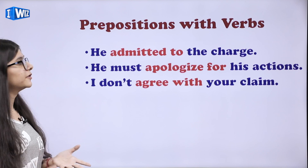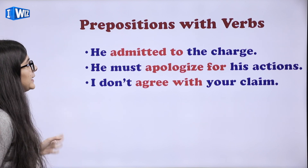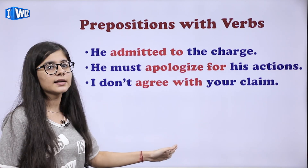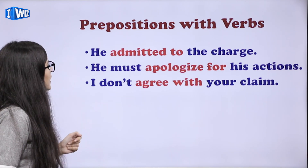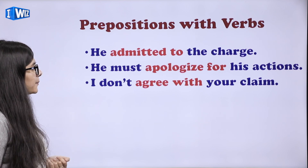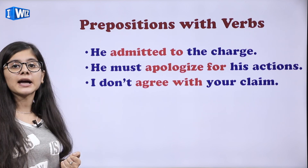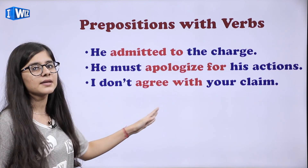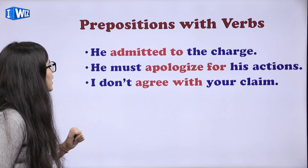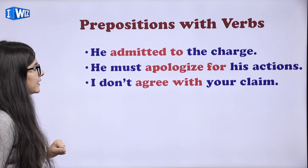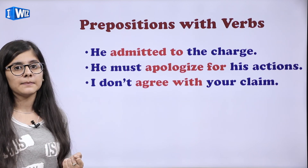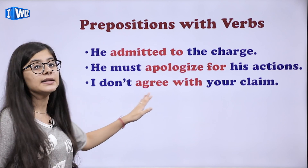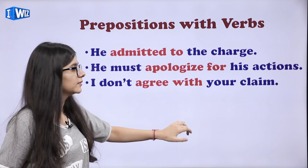Prepositions with verbs. He admitted to the charge — hamesha admitted ke saath kya lagega — 'to'. He must apologize for his action — use apne actions ke liye maafi maangni chahiye, apologize ke saath 'for'. I don't agree with your claim — main tumhare claim ke saath agree nahi karta — agree ke saath 'with'.